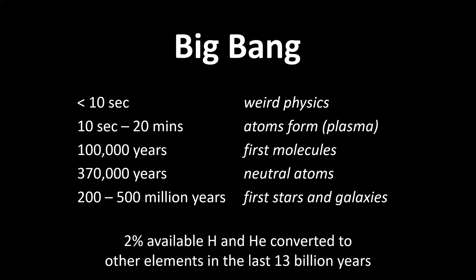Going on about 100,000 years, you get the first molecules — still ionized, nuclei joining together but electrons still stripped off. That lasts until about 370,000 years when you get neutral atoms formed for the first time and the universe becomes neutral. This is very important because light cannot pass through a plasma. At 370,000 years — called the recombination — the universe becomes transparent. That's where we see the cosmic microwave background, the first light we can see, because before that light couldn't penetrate. Then at 200-500 million years, first stars and galaxies form.